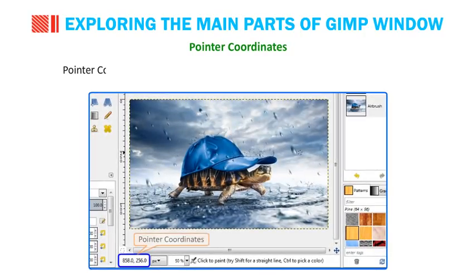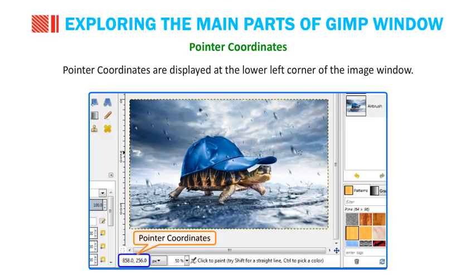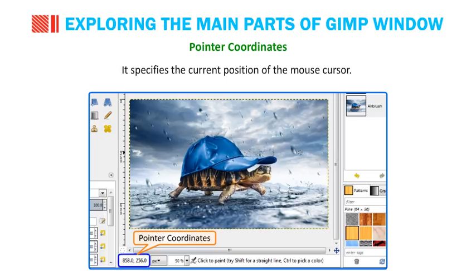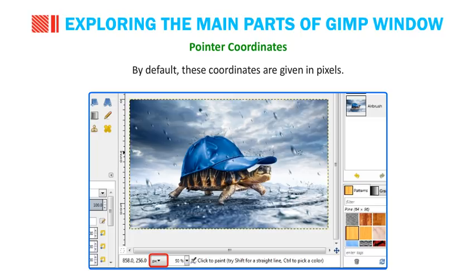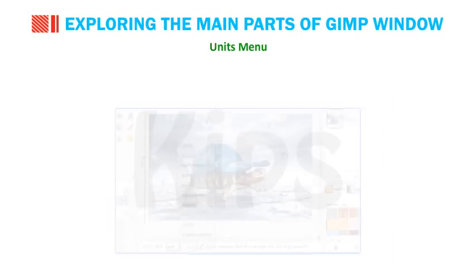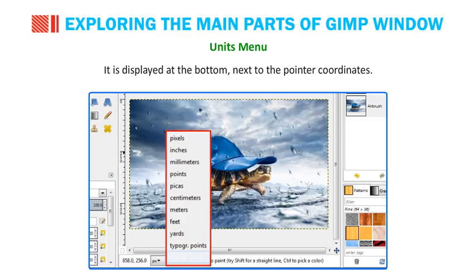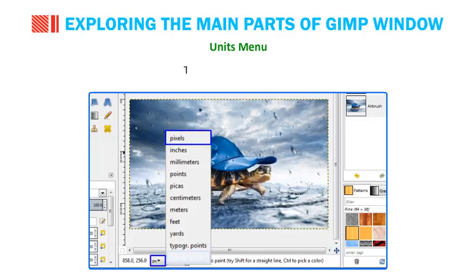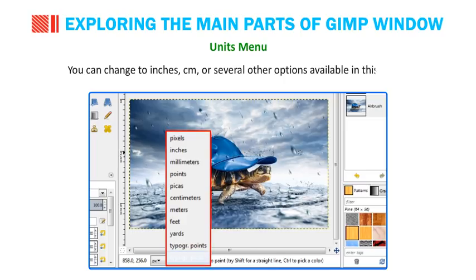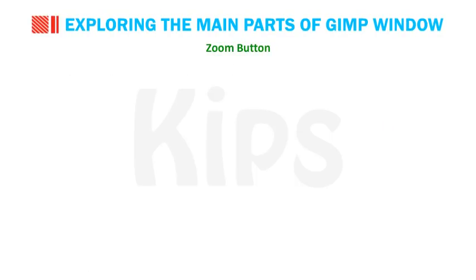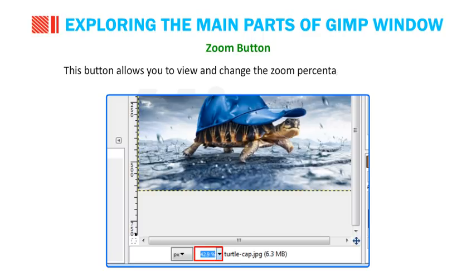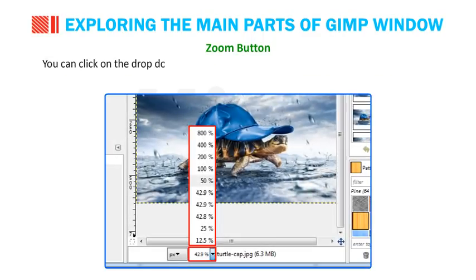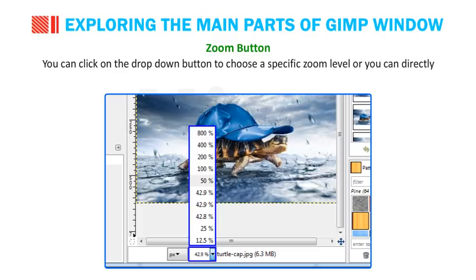Pointer coordinates are displayed at the lower left corner of the image window and specify the current position of the mouse cursor. By default, these coordinates are given in pixels; however, the unit of measurement can be changed from the Units Menu. The Units Menu, displayed next to the pointer coordinates, allows the user to change the units used for rulers. You can change to inches, centimeters, or several other options. The Zoom Button allows you to view and change the zoom percentage of your image. You can click the drop-down button to choose a specific zoom level or type directly in the text box.